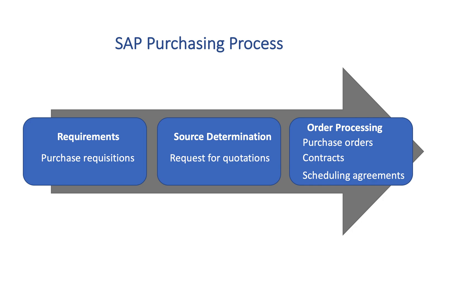The other option for long-term agreements is called scheduling agreements. Scheduling agreements have all of the same qualities as a contract, but also include predefined delivery dates. Like all major business processes in S4 HANA, reports can be run at any point to provide us with real-time insights into any of these purchasing documents. This entire purchasing process ensures that we have the right materials at the right time with the right price that aligns with our business strategy.